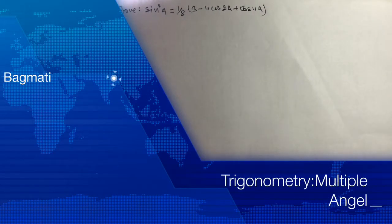Hello, Namaskar. Welcome to our new video. Today we are here with a new trigonometric problem. Your problem is to prove that sin 4a equals 1/8 times (3 - 4cos 2a + cos 4a). This is our problem.